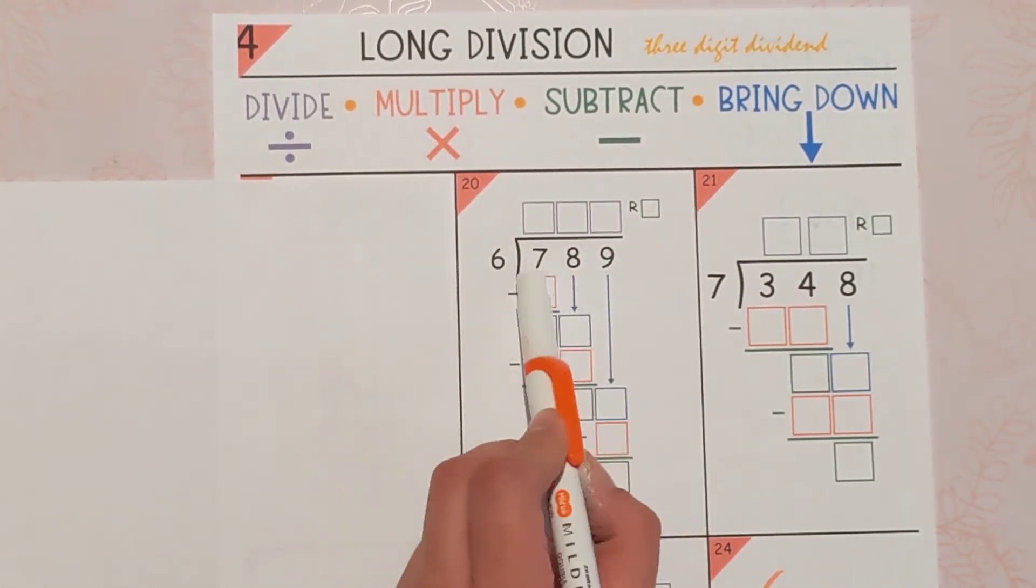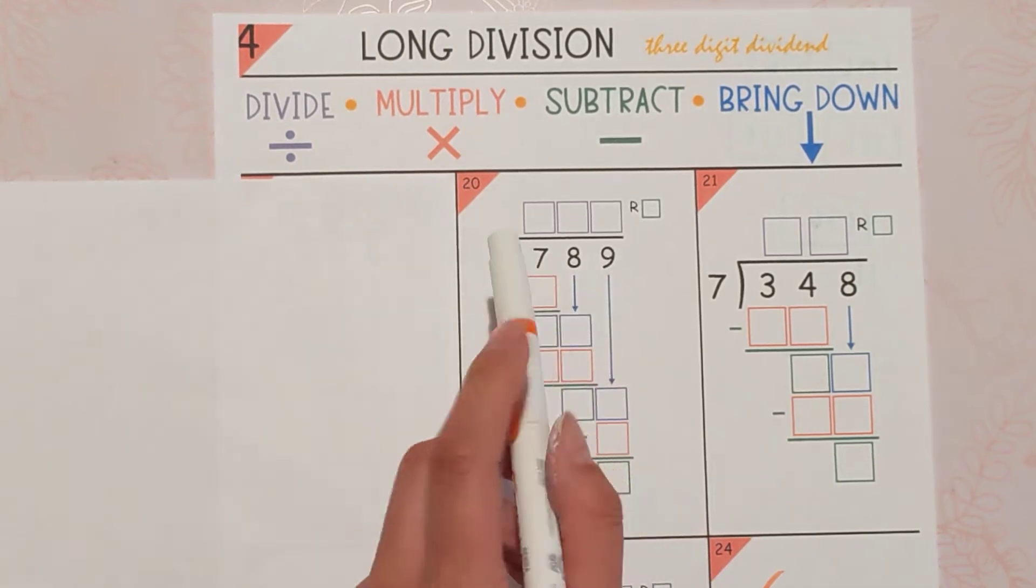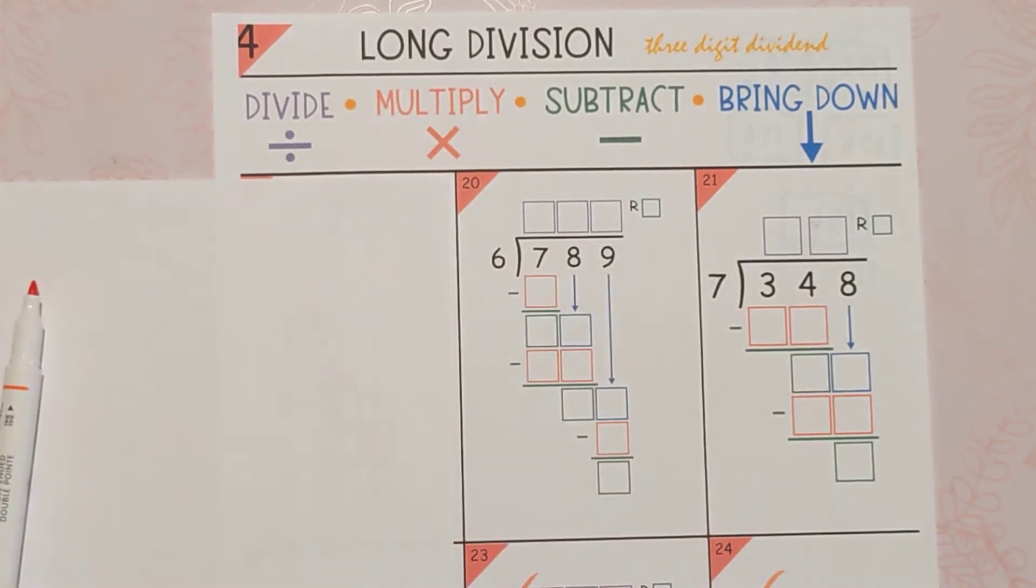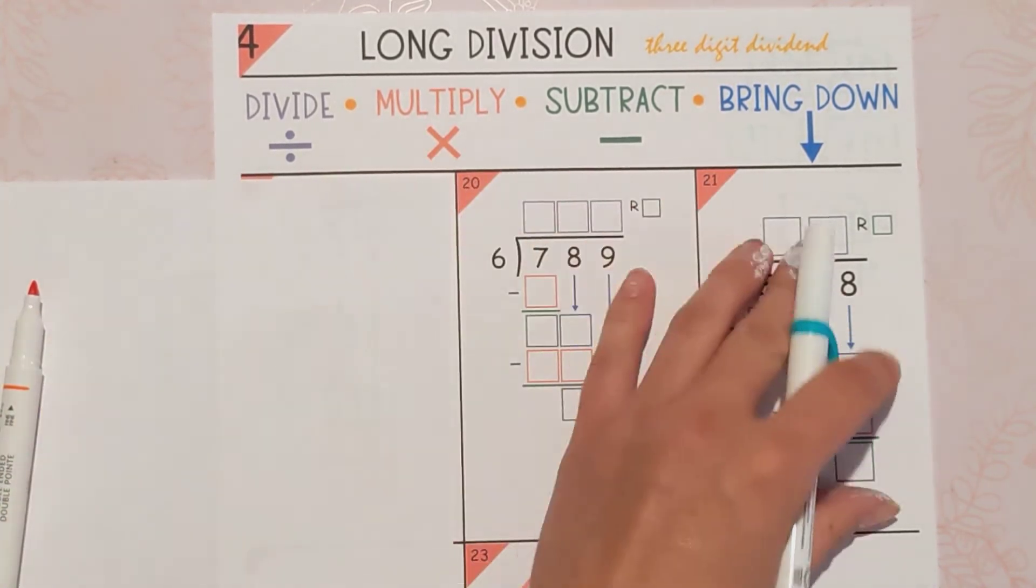This is our dividend, 789. It's the number that's getting divided up. So this is the amount of apples or cupcakes or whatever, and then this is the amount of groups that it's being put into.